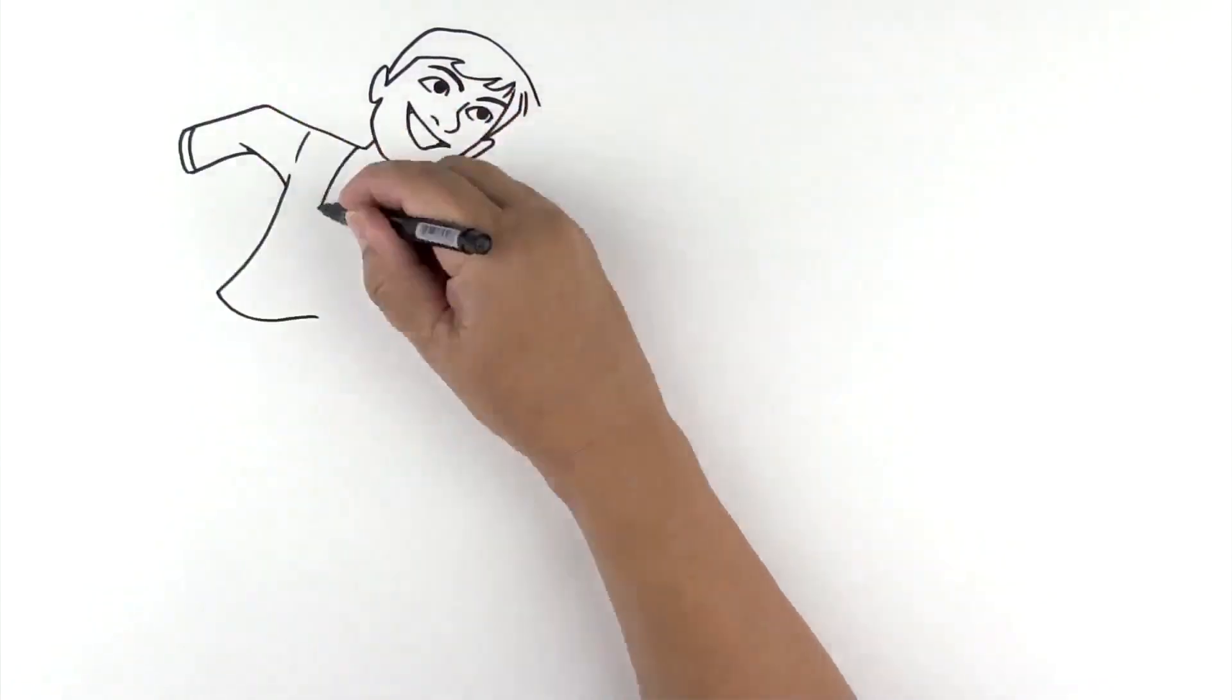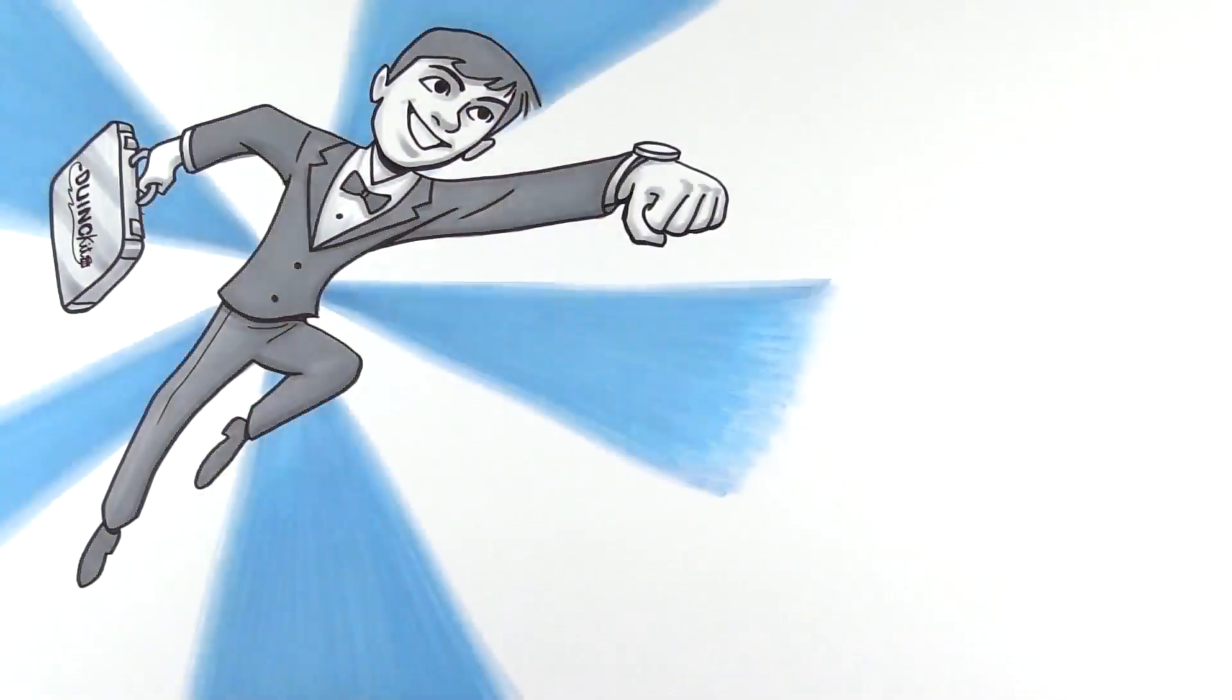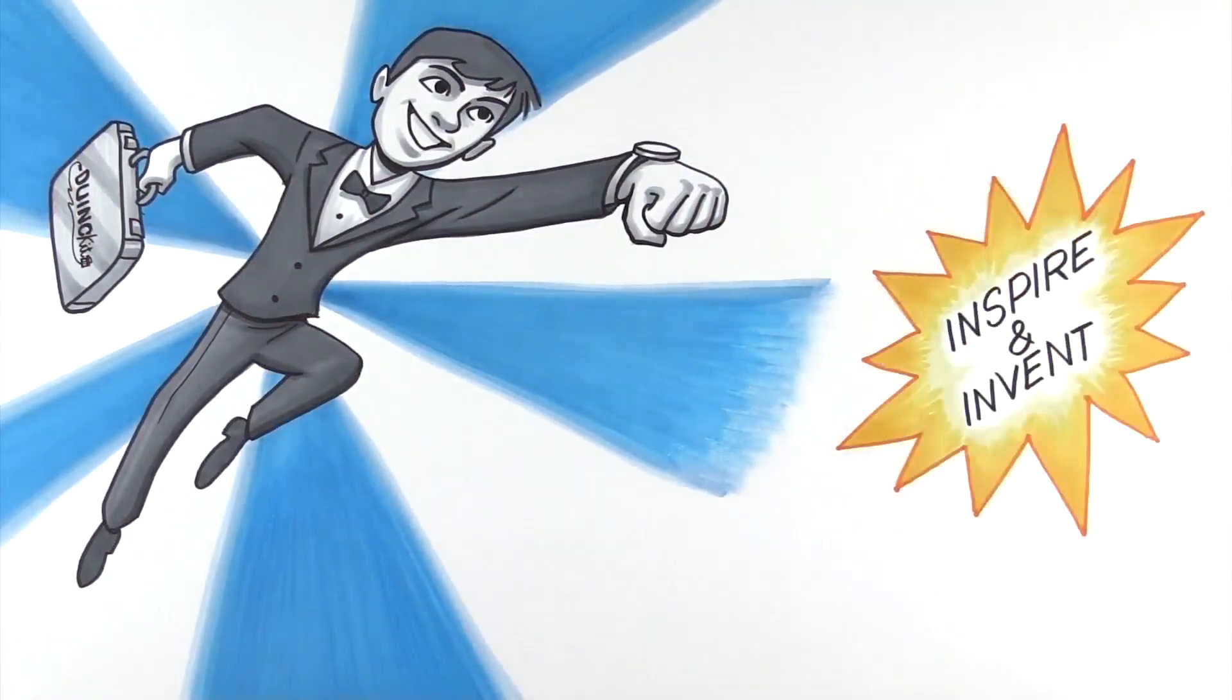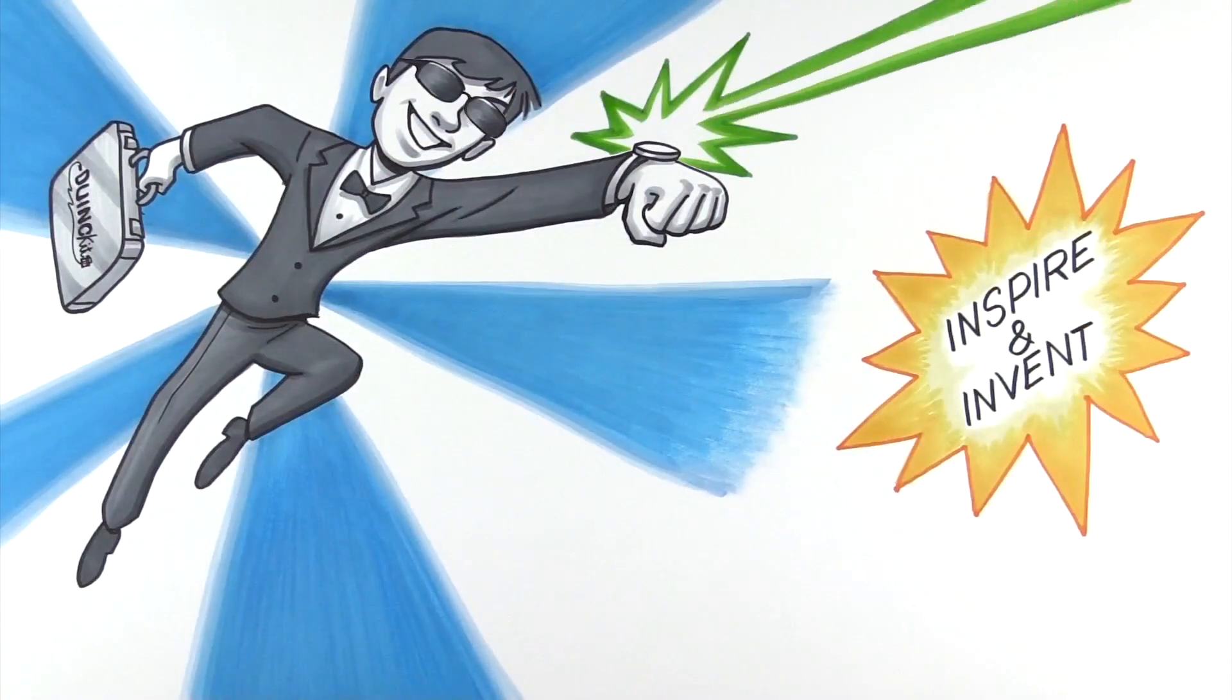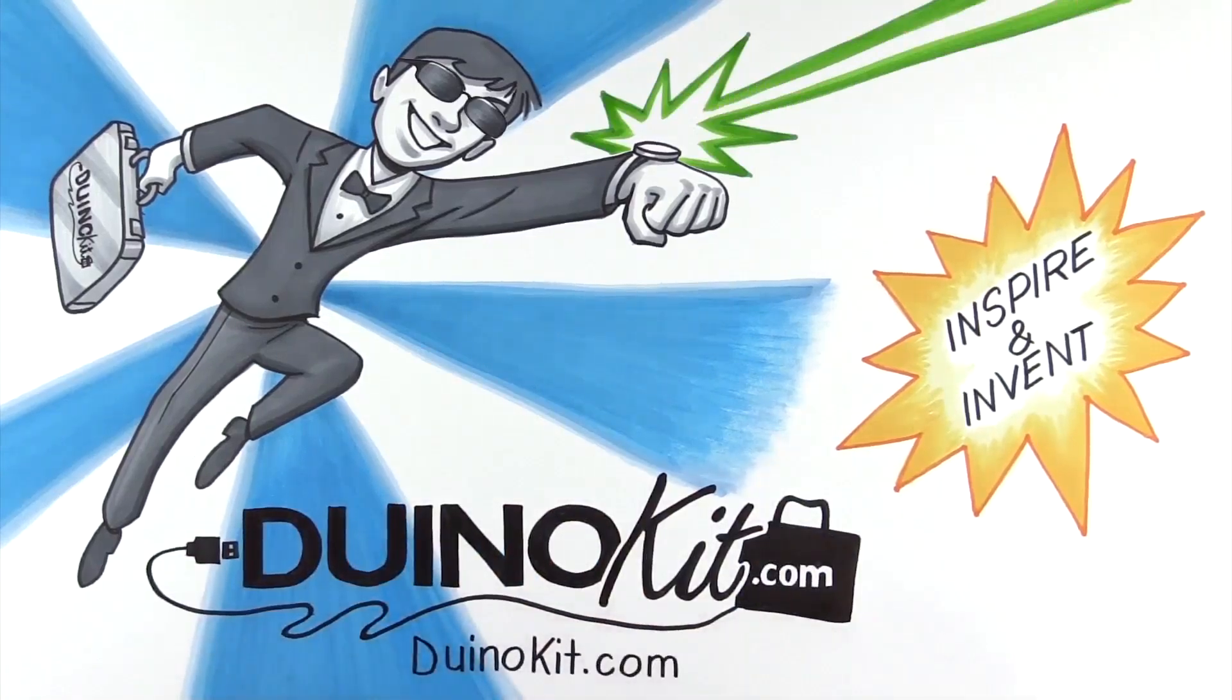Once you start learning with the Duino Kit system, inventions are only limited by your creativity. With online tutorials and a little experimenting, who knows? The next 007 gadget could be invented by you. So what are you waiting for? Go to duinokit.com and order today!